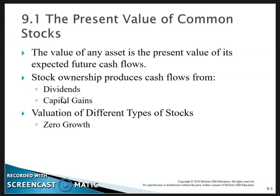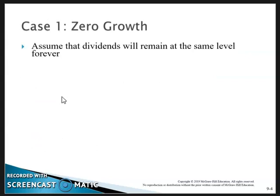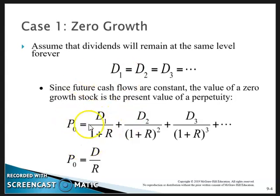We'll look at valuation of different types of stocks. We'll have zero growth — the most common zero growth example is a preferred stock. There are some different types of debt in Europe that would also be valued similarly, but that's a different topic. For zero growth, you assume the dividends are going to remain at the same level forever, which is the case with a preferred stock: D1 equals D2 equals D3, and so on forever. Since the future cash flows are constant, the value of a zero growth stock is the present value of a perpetuity — we sum up the present values of all future cash flows simply by dividing the dividend by the required rate of return.